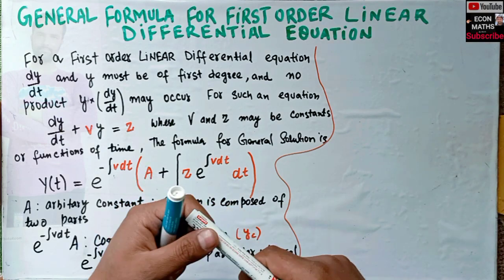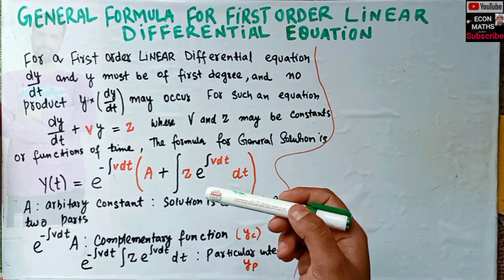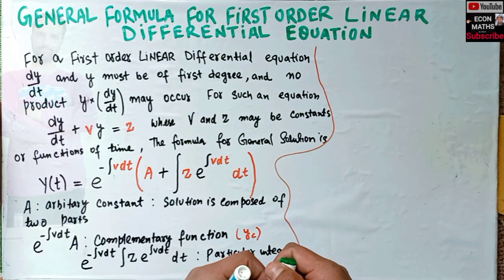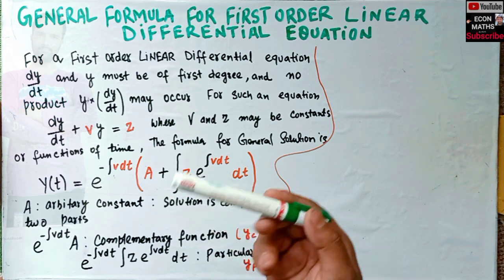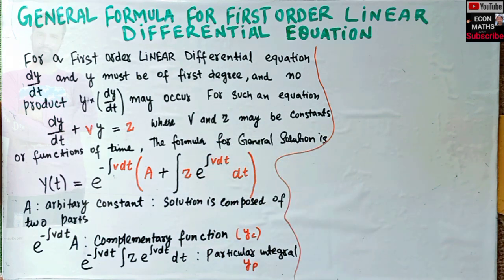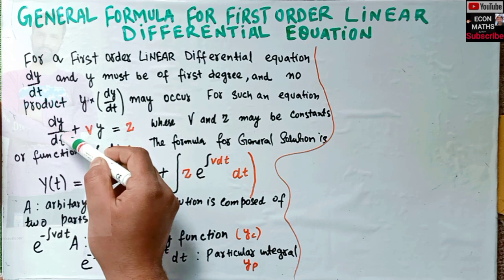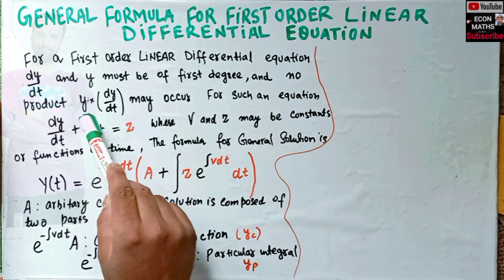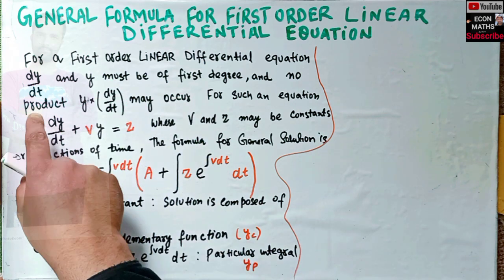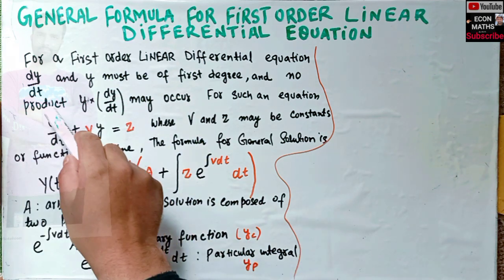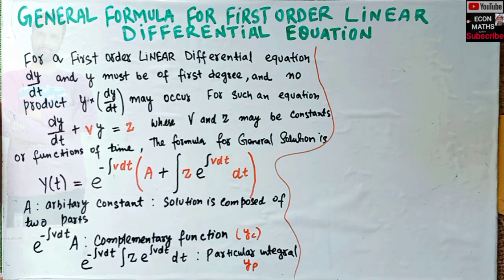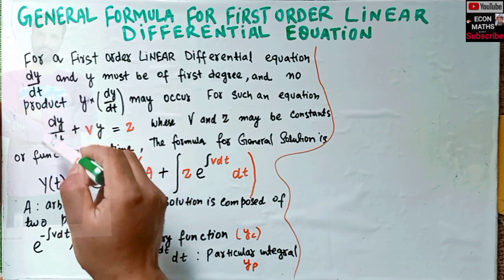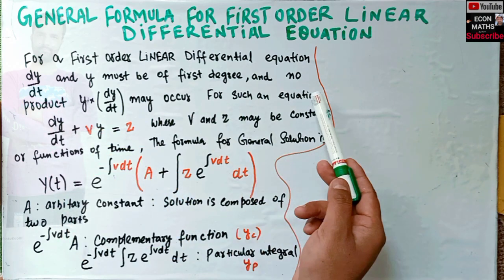This is the fourth video on differential equations. In this video we will discuss the general formula for first order linear differential equations. For such an equation, dy/dt and y must be of first degree, and no product of y and dy/dt may occur. The derivative should be of first degree, y should also be of first degree, and there should be no multiplication between y and dy/dt.